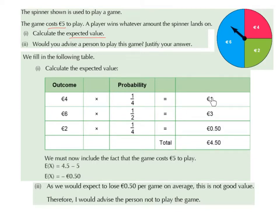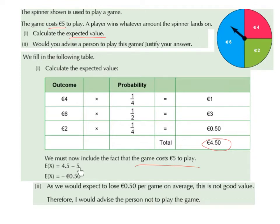One euro plus three euro plus 50 cent is four euro 50. We must now include the fact that the game costs five euro to play. So four euro 50 — what we expect to win — minus the five euro cost of the game — leaves us with minus 50 cent. Our expected value is minus 50 cent.